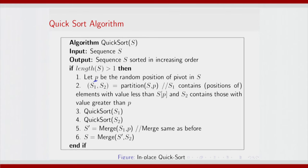s1 and s2 begin with an index for s1 and begin an index for s2. The rest is basically the conquer: you invoke quicksort on s1 and quicksort on s2 recursively. You can also come up with a non-recursive version of quicksort.